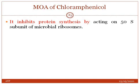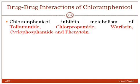The mechanism of action of chloramphenicol: chloramphenicol inhibits protein synthesis by acting on the 50S ribosomal subunit. Regarding drug interactions, chloramphenicol inhibits the metabolism of tolbutamide, chlorpropamide, warfarin, cyclophosphamide, and phenytoin.